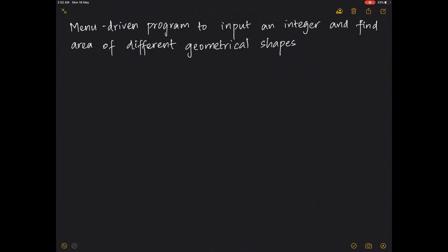Here is a menu-driven program to input an integer and find the area of different geometrical shapes. For a menu-driven program of this question, it would mean something like: if the user enters 1, find the area of a circle; if the user enters 2, find the area of a square; if the user enters 3, find the area of a rectangle; if the user enters 4, find the area of a triangle. Since there is no menu given as such, you can actually create a menu first and then go ahead writing the program.